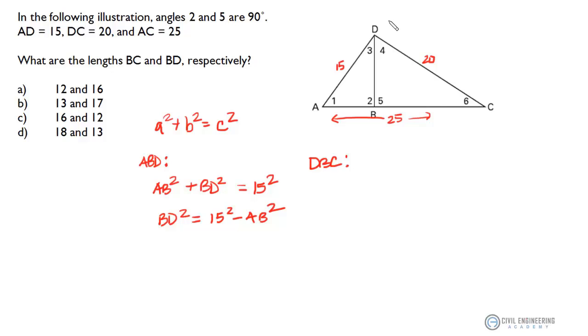So let's define the triangle DBC the same way we did ABD. We can say BD squared plus - now we got to get a little tricky here because we don't know what side BC is, but we can say that side BC is going to be 25 minus AB squared.